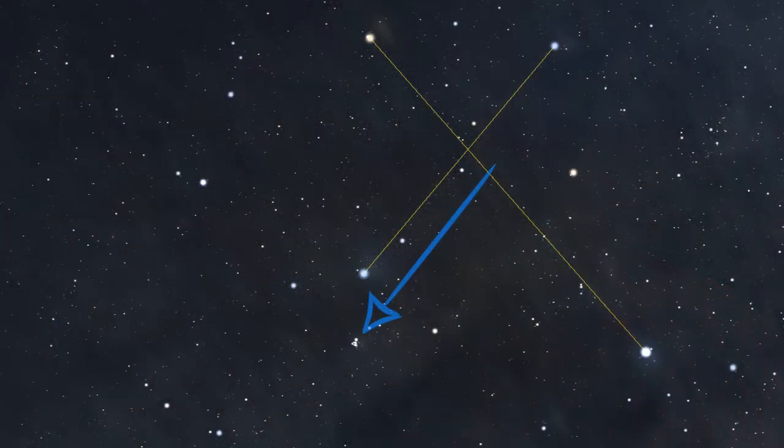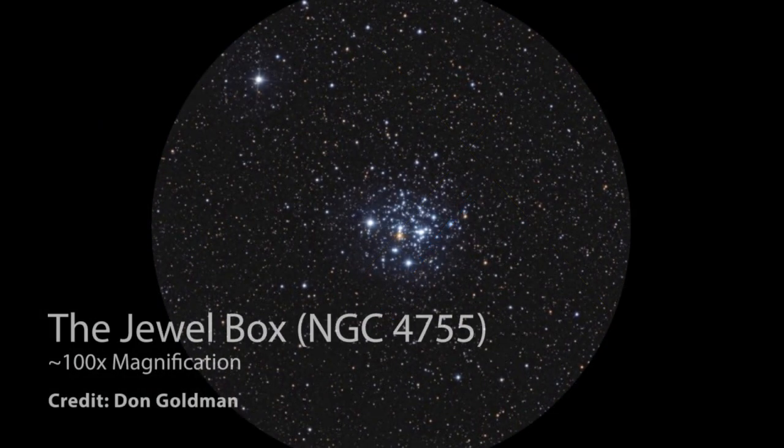The first year-round target for the southern hemisphere is the jewel box, found right here beside the southern cross. This is a beautiful open cluster visible in binoculars and small telescopes.